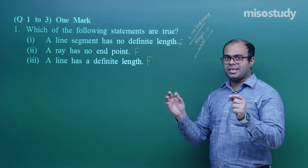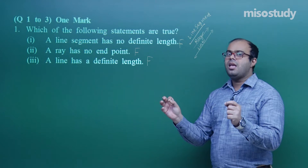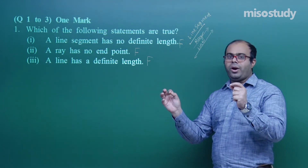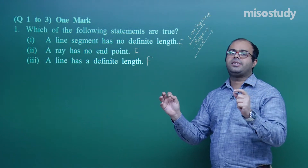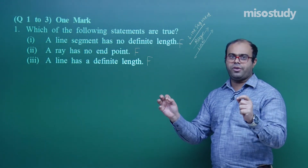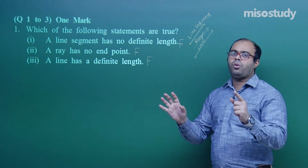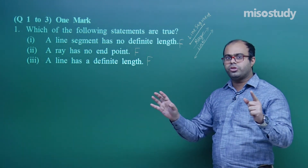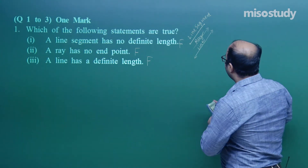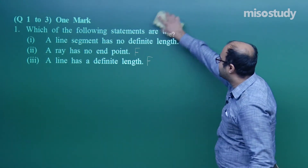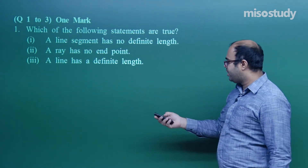To summarize: a line segment has a starting point and an end point and has a definite length. A ray has a starting point, extends to infinity on the other side, and does not have a definite length. A line does not have a starting or end point, extends to infinity both sides, and does not have a definite length. All three statements in this question are false.